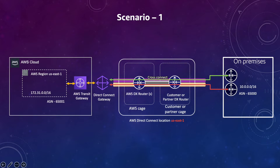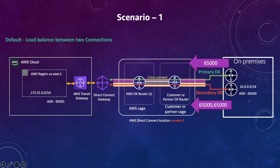Scenario one: two Direct Connect connections through the same location. By default, AWS will load balance across these two connections. But if you want to make one connection primary — say the green line — and the orange one secondary, you use AS path since both connections are within the same location. I'll use 65000 for the primary connection and prepend 65000, 65000 for the secondary. That way, if the primary goes down, traffic falls back to the secondary.